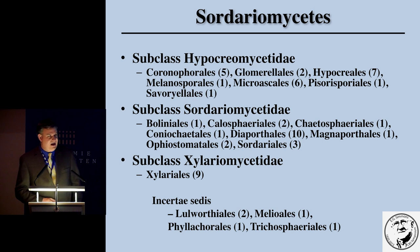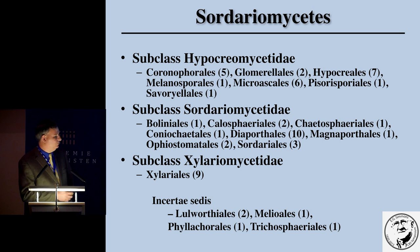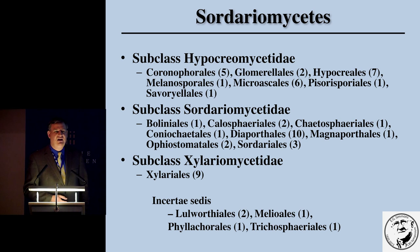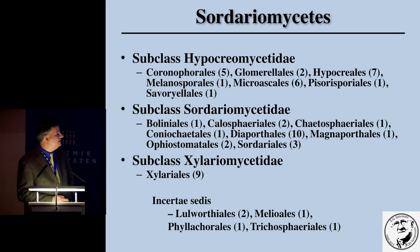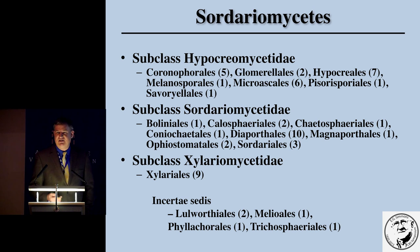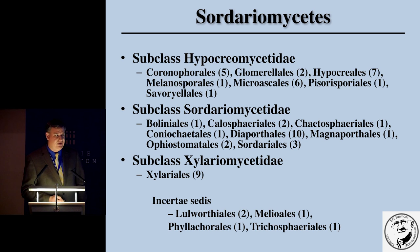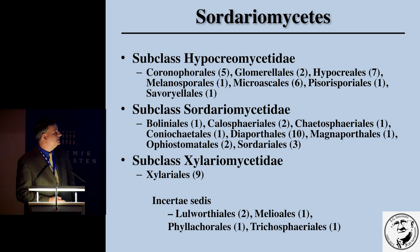What we have shown are the orders in each subclass with the putative number of families given in parentheses. The Hypocreomycetidae subclass has somewhere around seven orders. There are eight orders in Sordariomycetidae. And Xylariomycetidae has the Xylariales. There are also some orders in Sordariomycetes incertae sedis that are relatively small with not a lot of members.